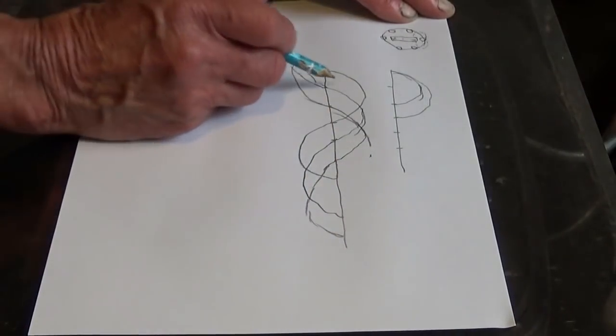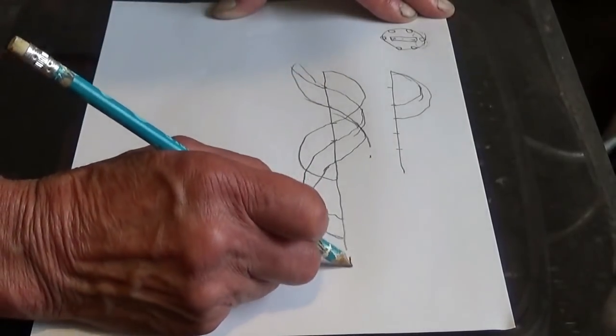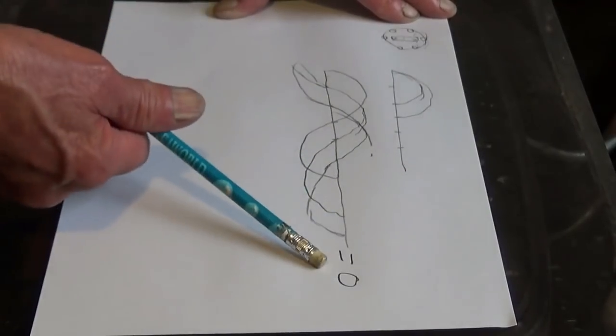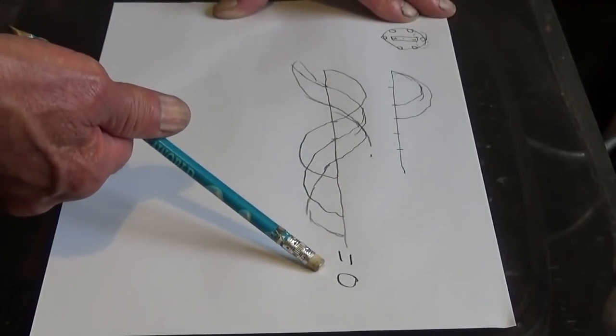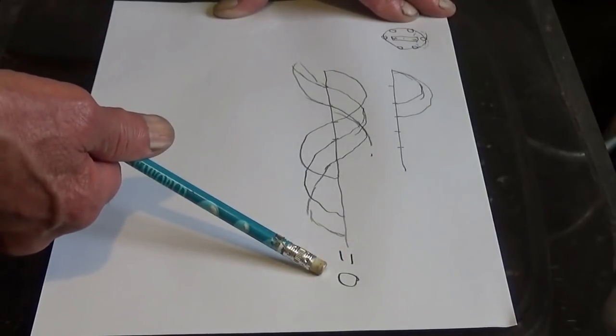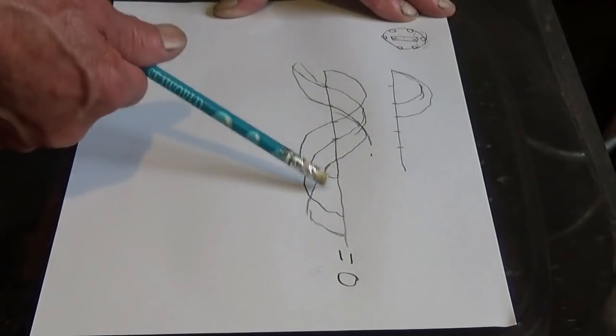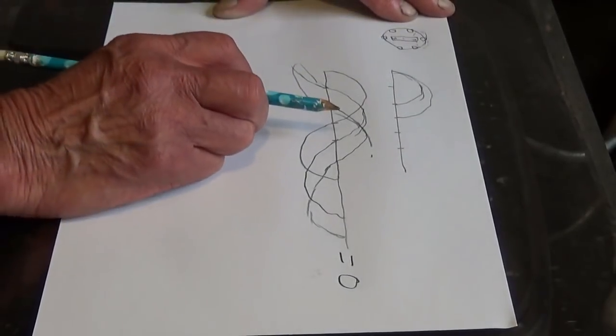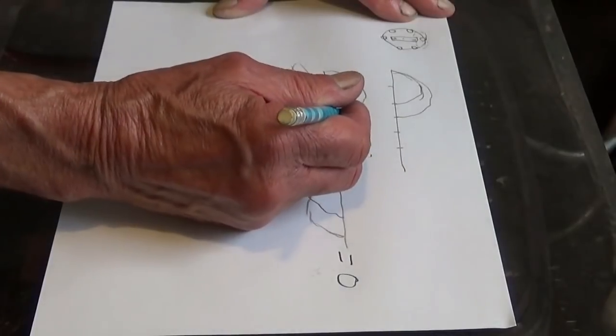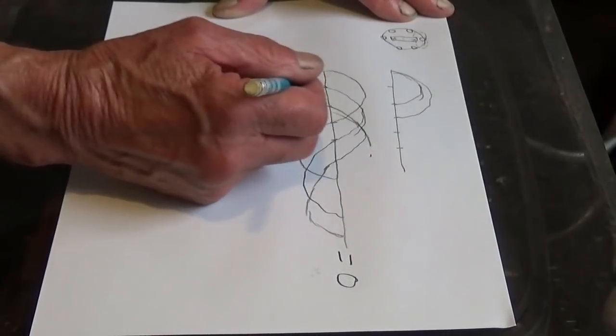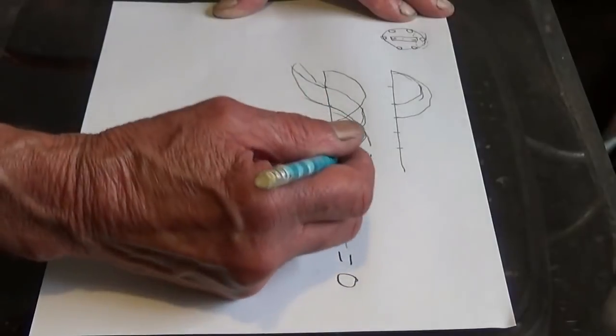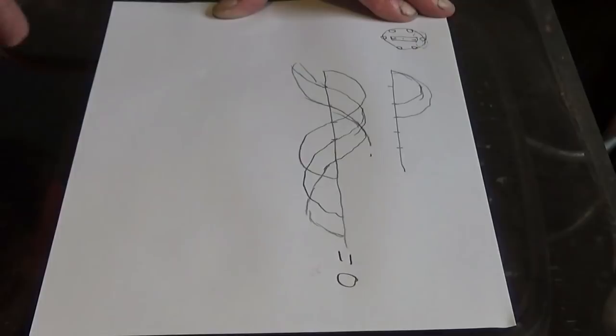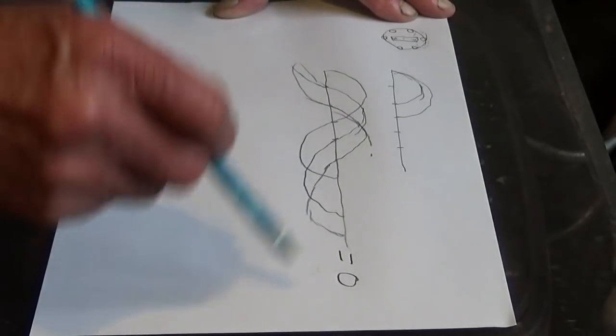So when you add these up, they equal zero. This is the important bit, this is, if you like, the magical bit of why we have three-phase electricity. Because when you add all these up, no matter where in any 360 degrees, it equals zero current. The negatives always equal the positives.